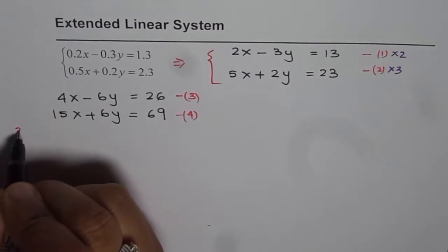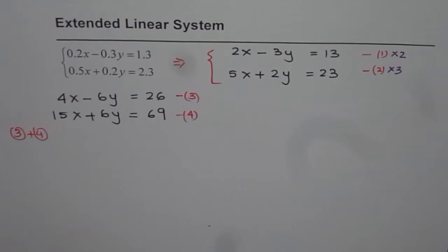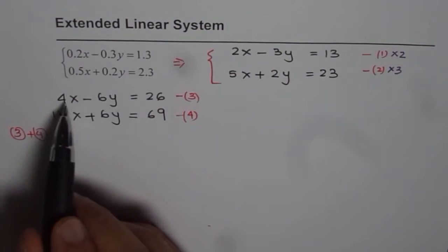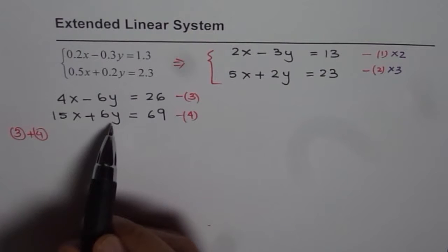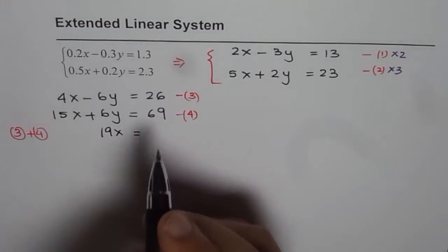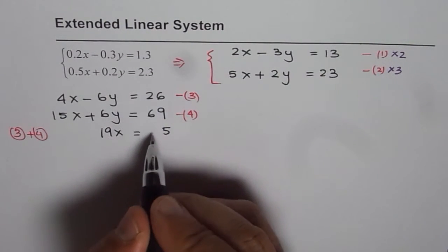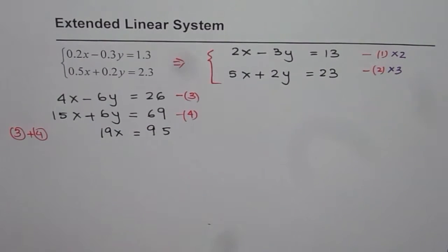Now if I add equation 3 and 4 then what happens? In that case we get x values, y's cancel out. So we get 19x as equal to, let's add them up, 6 and 9 is 15 and 7 plus 2 is 9. So we get 95 over x.